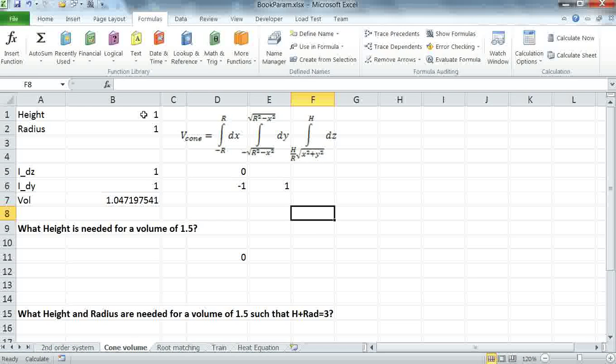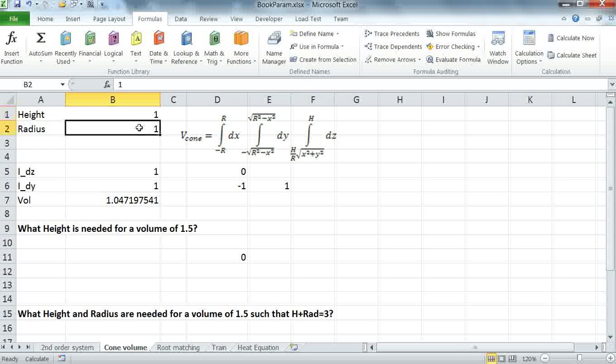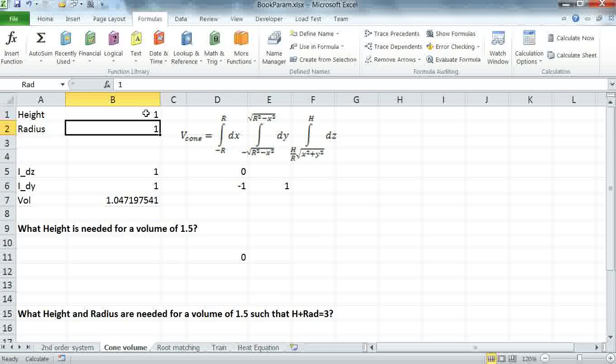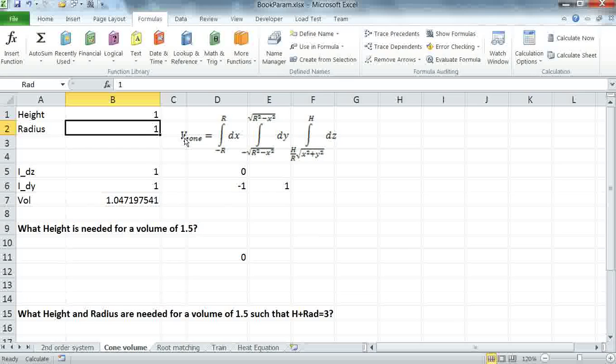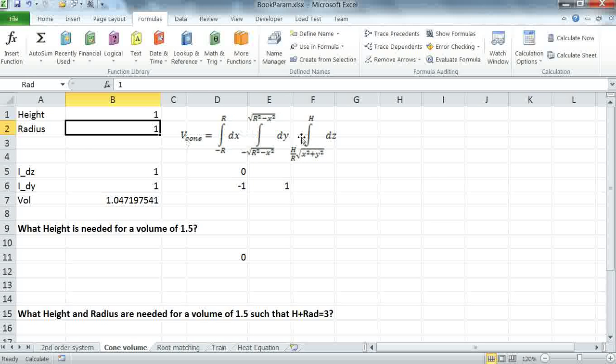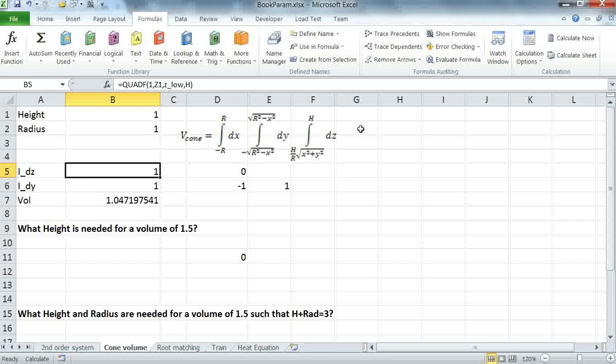I began by defining named variables for my height as H and my radius as R, and my initial guesses for these parameters is 1 and 1. I'm going to compute this triple integral using a nested QuadF program. And I'm going to use X1, Y1, and Z1 as my variables of integration.